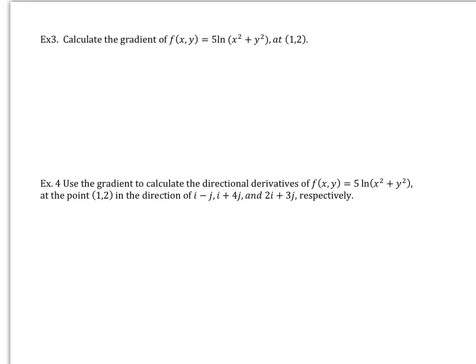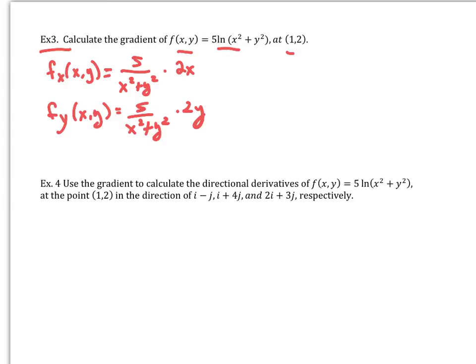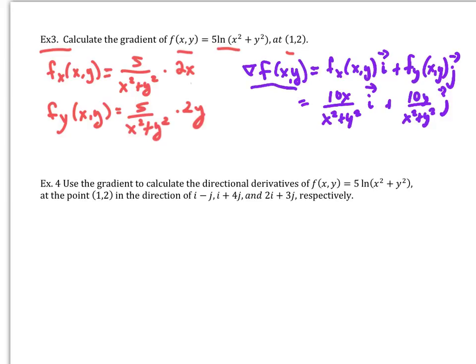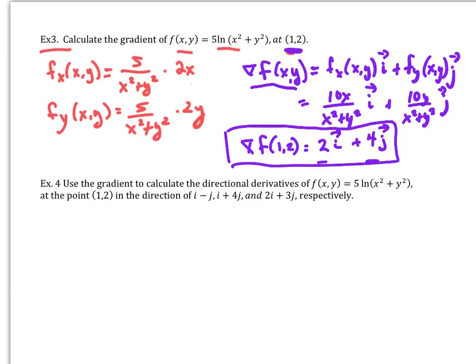Example: calculate the gradient of f(x, y) at the point (1, 2) for the given function involving ln. We find the two partial derivatives with respect to x and y — taking 5 over the argument of the ln function and chaining off the desired variable. Writing out the gradient vector, then plugging in point (1, 2) gives values 2 and 4, so the gradient is 2i + 4j. This is the direction of greatest change at that point.